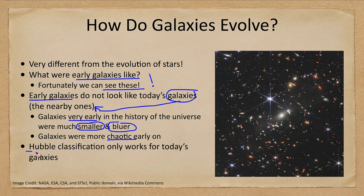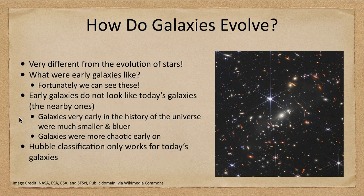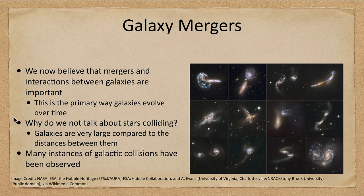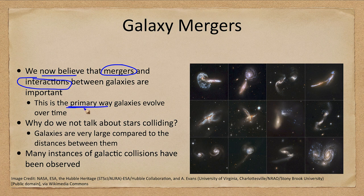The Hubble classification was made based on the galaxies that we see today — those nearby, within maybe a hundred million light years or so. Earlier galaxies look quite different. We now believe that mergers and interactions between galaxies are very important in galaxy evolution, and this is the primary way that galaxies evolve over time.